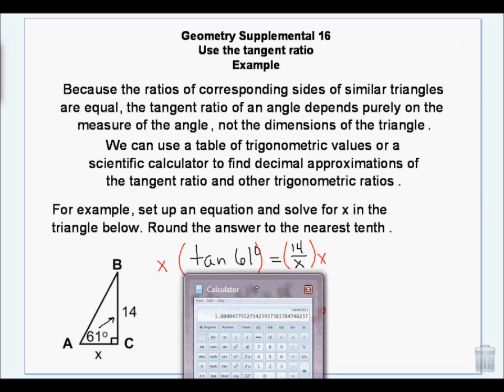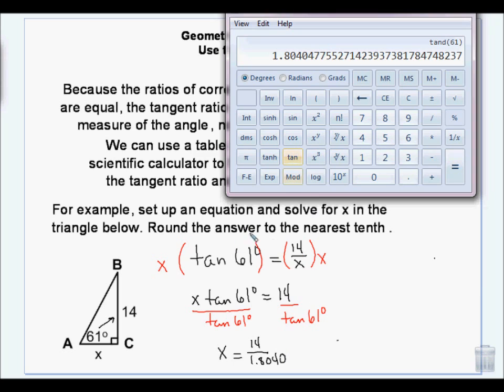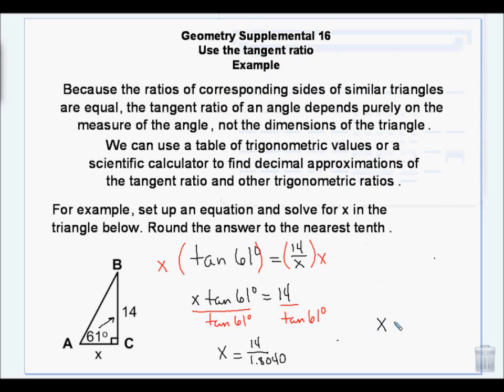So I go 1.804. So x is equal to 14 divided by... I'm going to round this answer to the nearest tenth. We always take our tangent out to four places, though. So I'm going to do 14 divided by 1.804. And I get 7.8. So x is equal to 7.8.